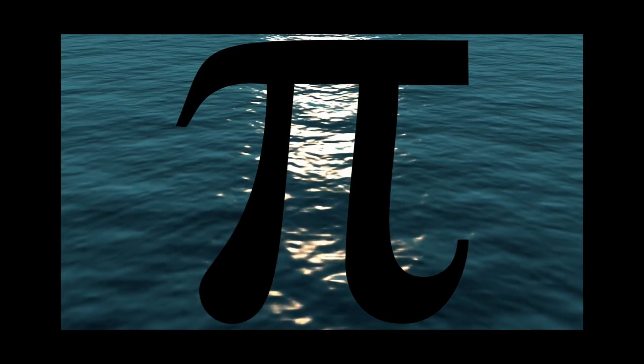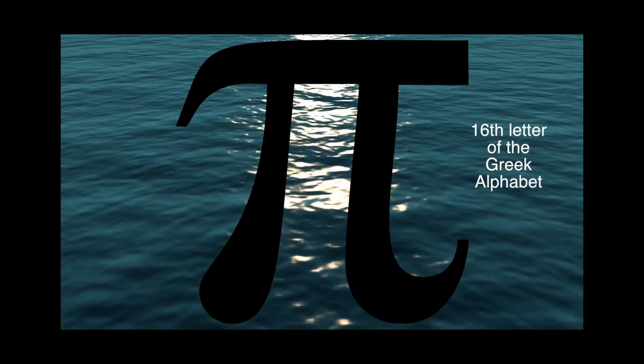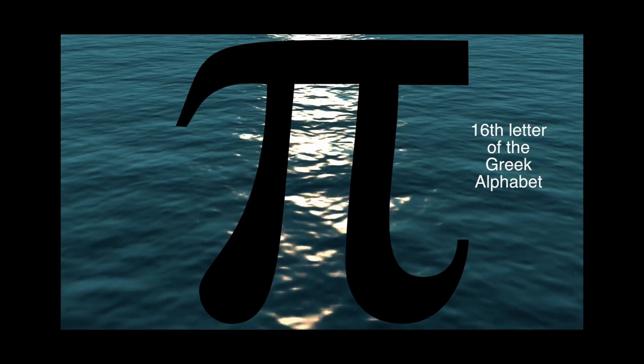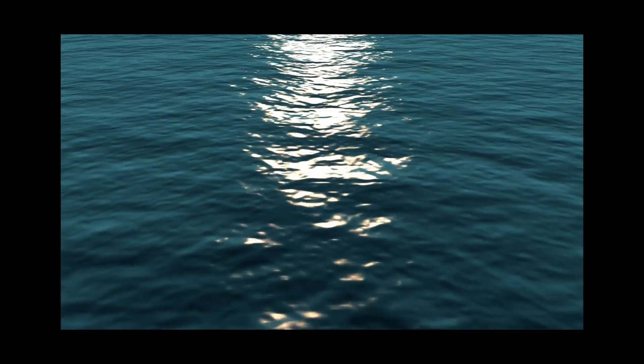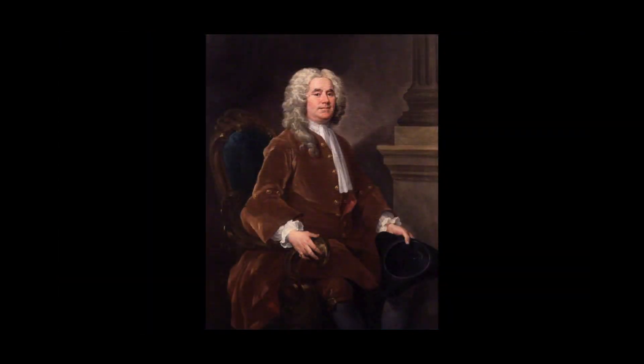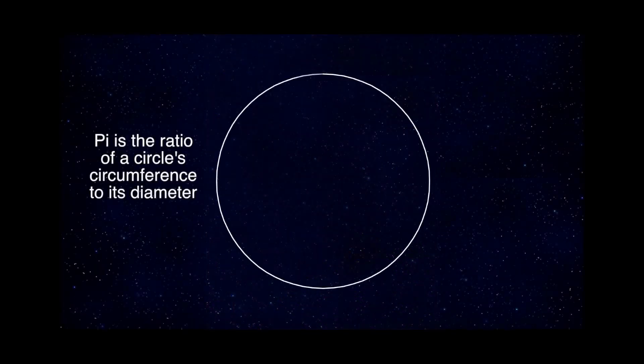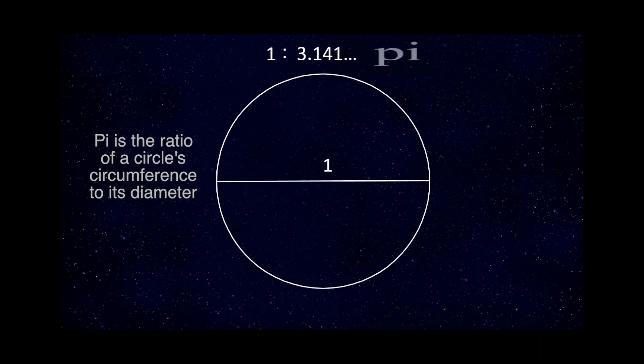Pi is often considered the most intriguing and important number in all of mathematics. It's the 16th letter of the Greek alphabet, but that symbol wasn't used until 1706 by mathematician William Jones, who used it because the letter in Greek, pronounced like our letter P, stands for perimeter. As pi is the ratio of a circle's circumference to its diameter, perimeter is a good word for it.